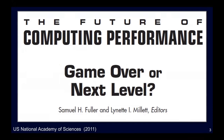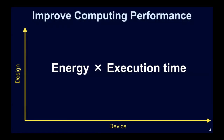Since we are talking about computing performance, we first have to define performance. For this presentation, I define performance as energy times execution time. Why this metric? Because there are many ways to improve energy at the cost of execution time — for example, lower the voltage a lot. And there are ways to improve execution time at the cost of energy — increase the voltage a lot. But there are very few ways to improve both simultaneously.